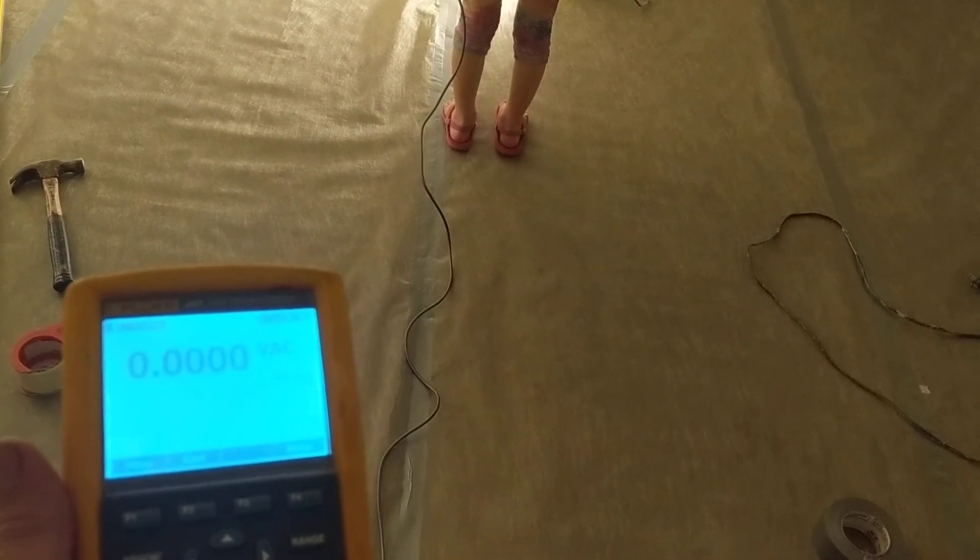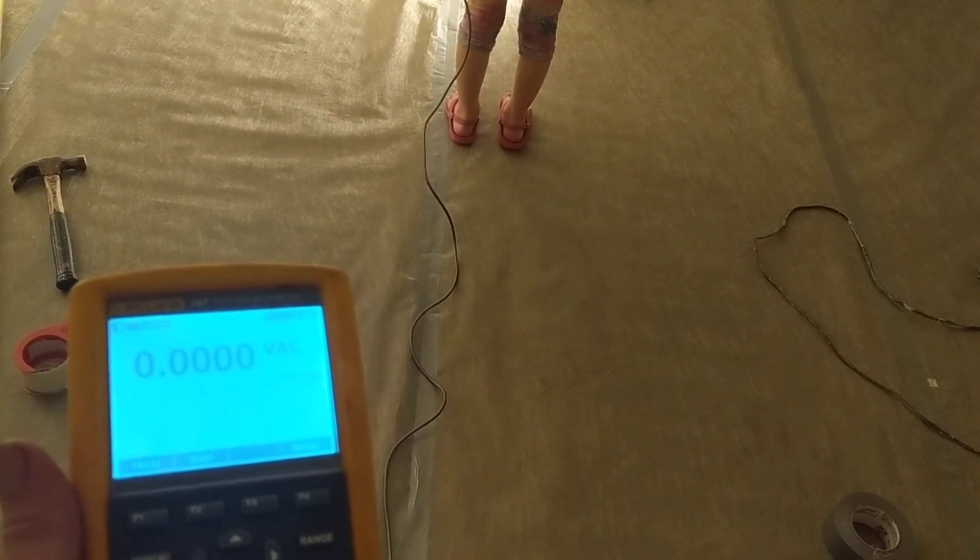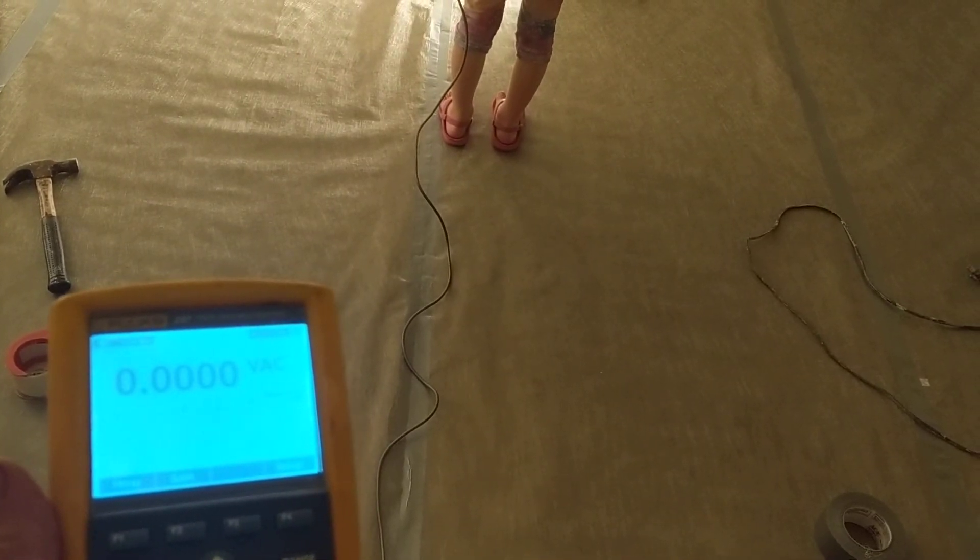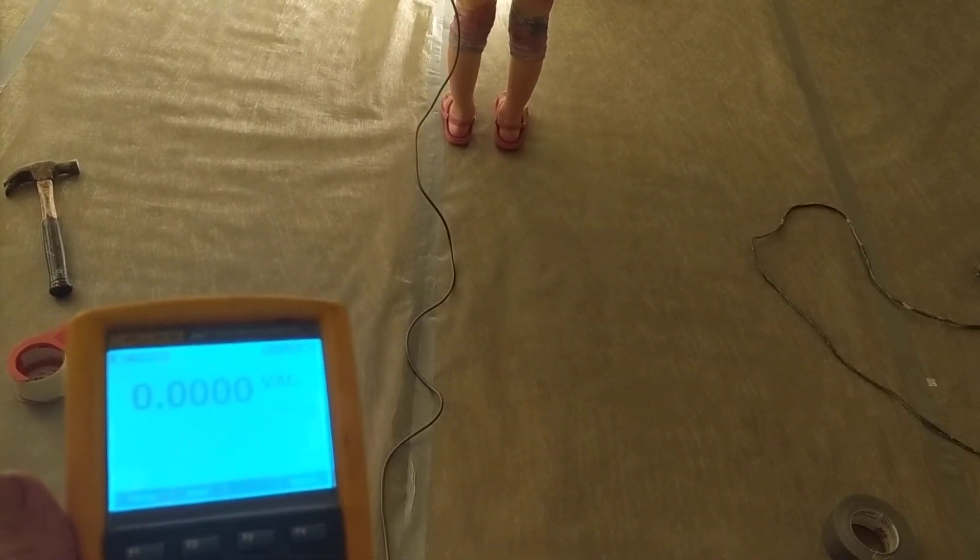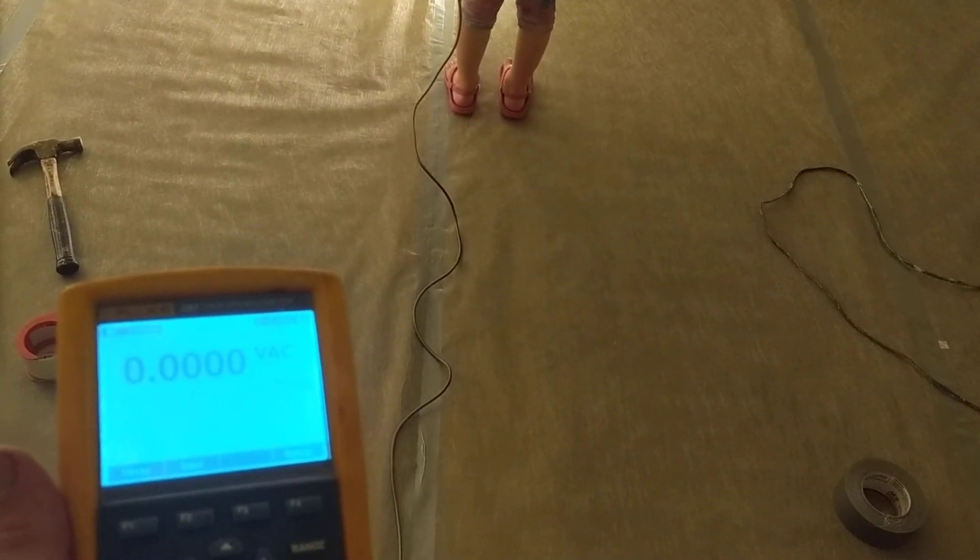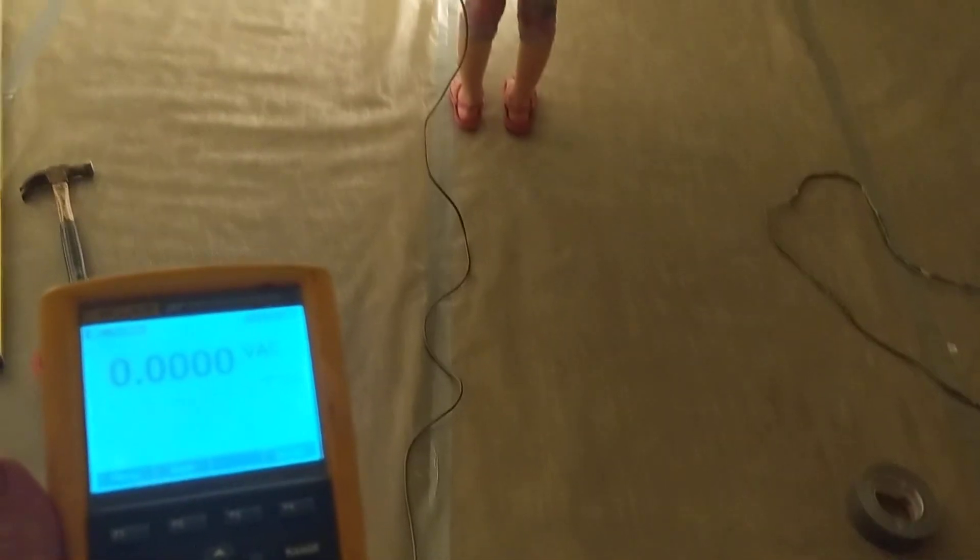So back to 0 body voltage. She's about 3 feet away from that light that's plugged in. Your body voltage in a shielded room, if you're about 3 feet away from anything plugged in, should be at around 0 in a properly shielded room.